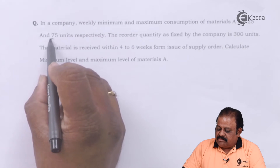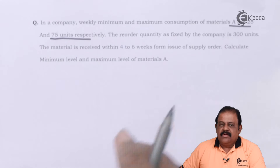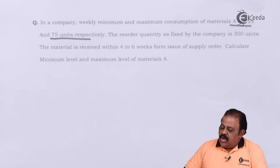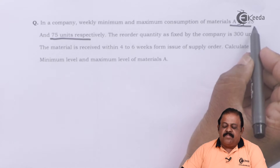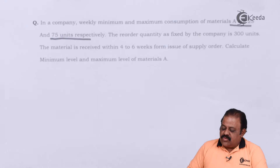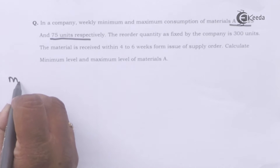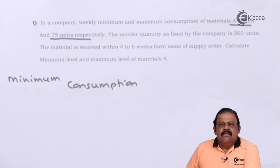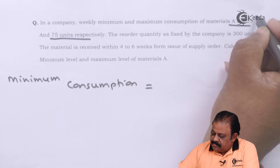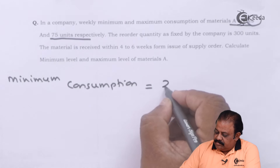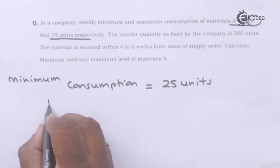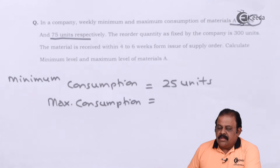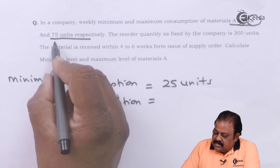The minimum consumption is 25 units and maximum consumption is 75 units per week. That means during a particular week, the minimum use of material A is 25 units and the maximum usage is 75 units.